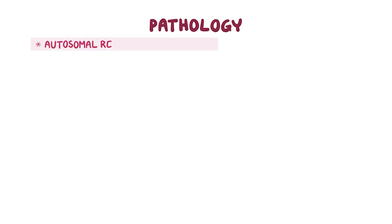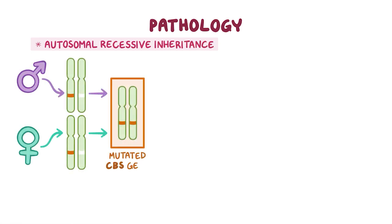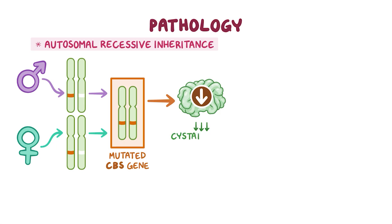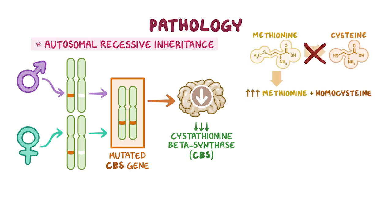Classical homocystinuria is caused by mutations in the CBS gene and follows autosomal recessive inheritance. An individual must inherit a copy of the mutated CBS gene from both parents to be affected by the disorder. A mutated CBS gene decreases activity of the enzyme cystathionine beta-synthase, or CBS. Without a properly functioning CBS enzyme, methionine cannot easily be converted to cysteine, causing methionine and homocysteine to increase in the body while cysteine levels remain low.